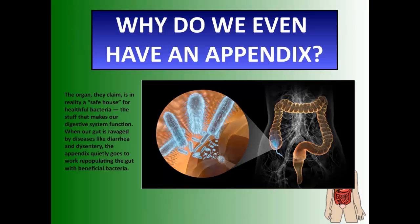Recent science has shown something new about the appendix. Scientists claim it's actually a safe house for healthy bacteria — the bacteria that make your digestive system function live here and move throughout the large intestine. When your appendix is removed, those bacteria can't hang out anymore. So if you experience a major illness with severe diarrhea or dysentery, the appendix quietly repopulates the gut with needed bacteria. Without the appendix, your body has to find other ways to get that bacteria back — though it may still be as useless as we've thought for the past 80 years.